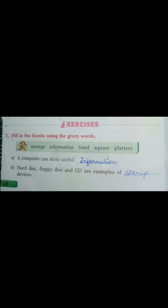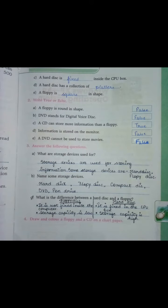Exercise number 1 is fill in the blanks using the given words. A computer can store useful information. Hard disk, floppy disk and CD are examples of storage devices. A hard disk is fixed inside the CPU box. A hard disk has a collection of platters. A floppy is square in shape.